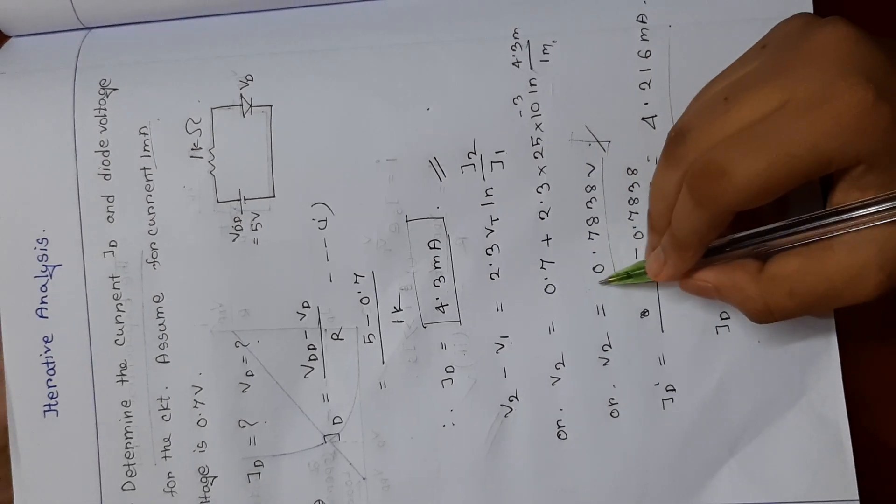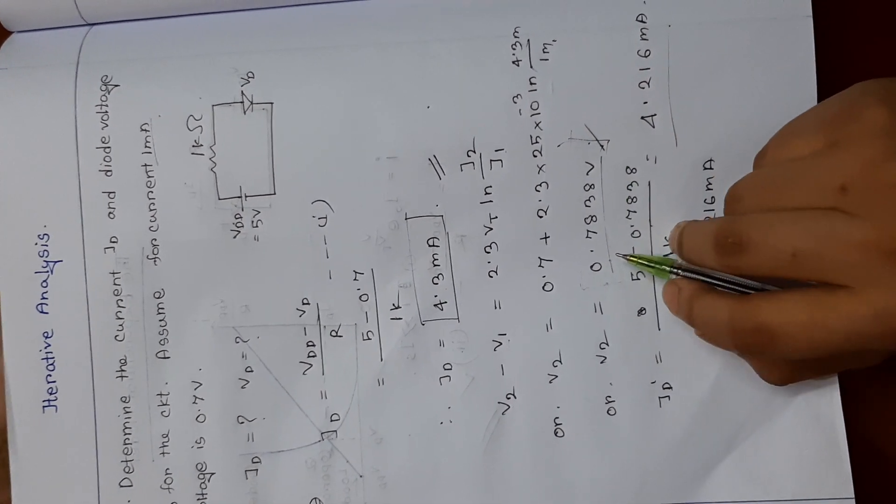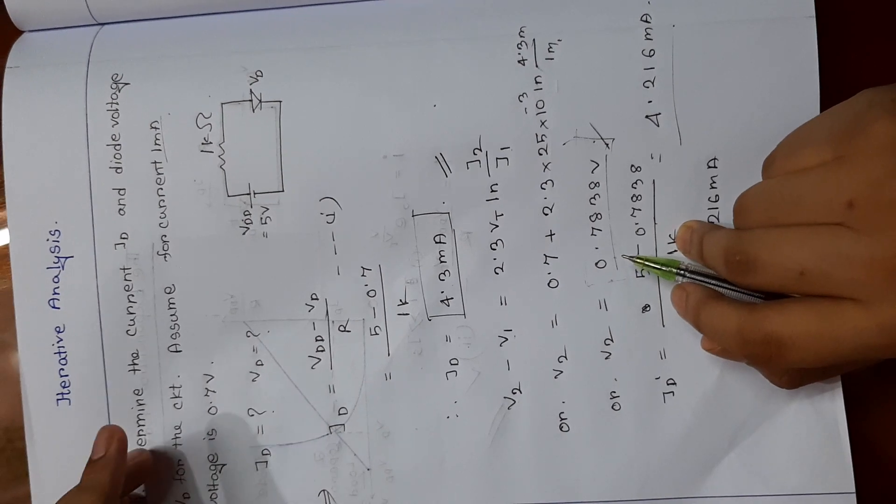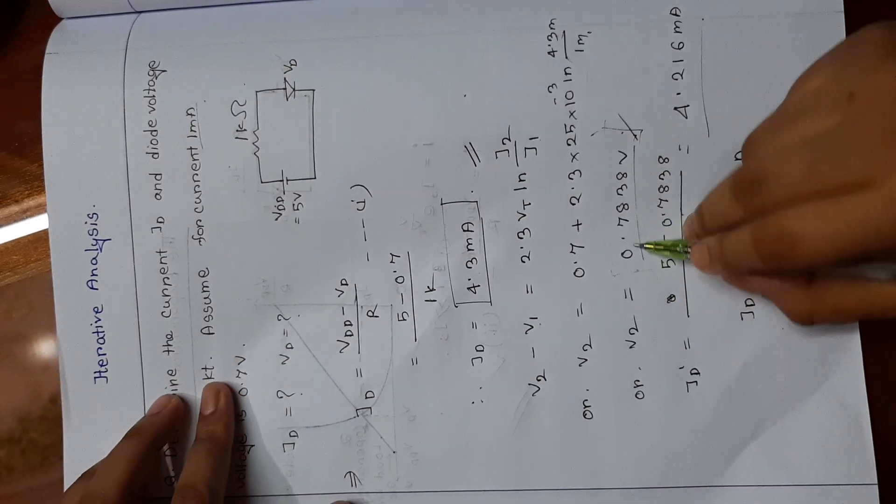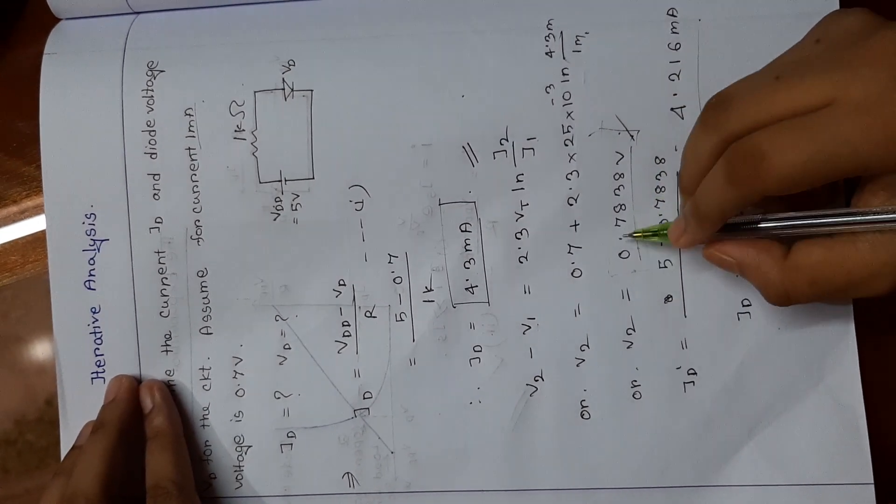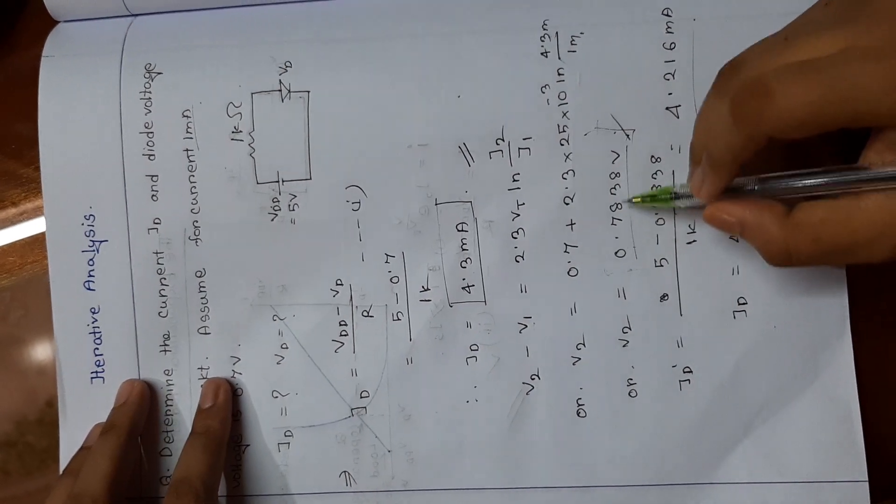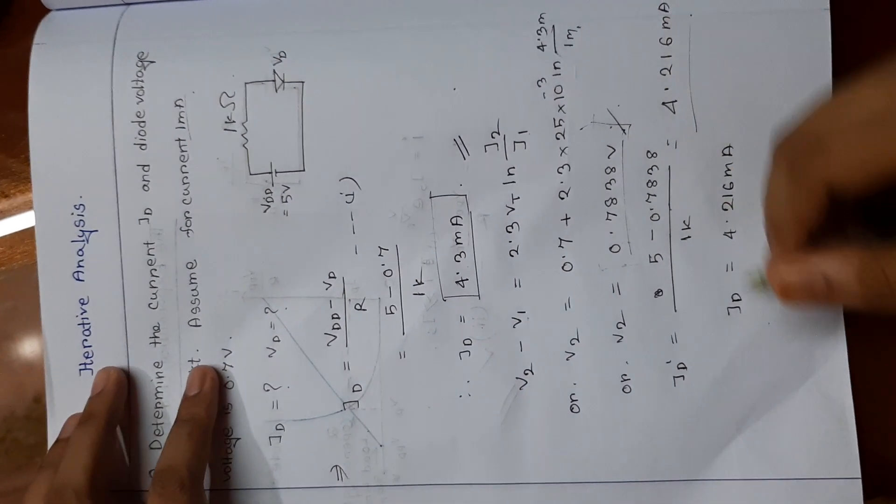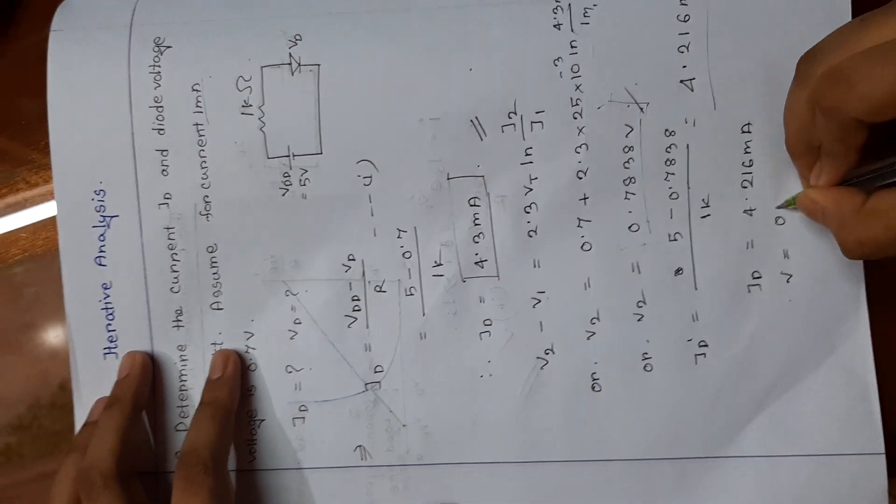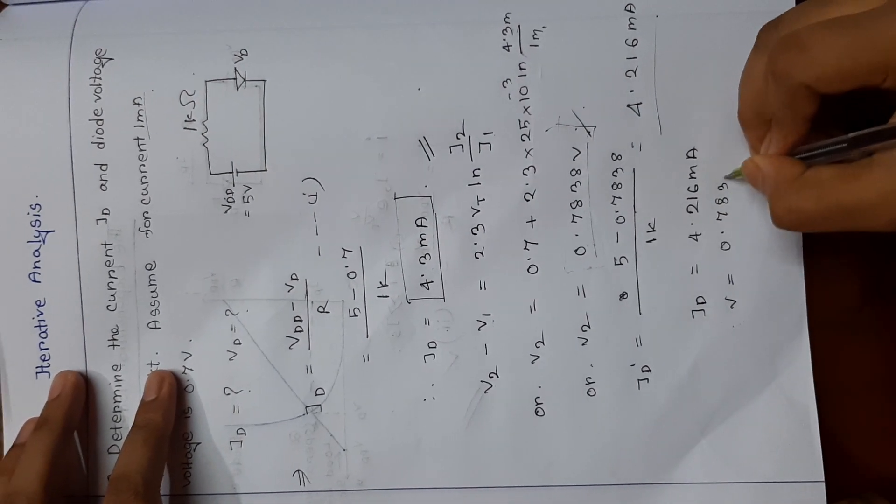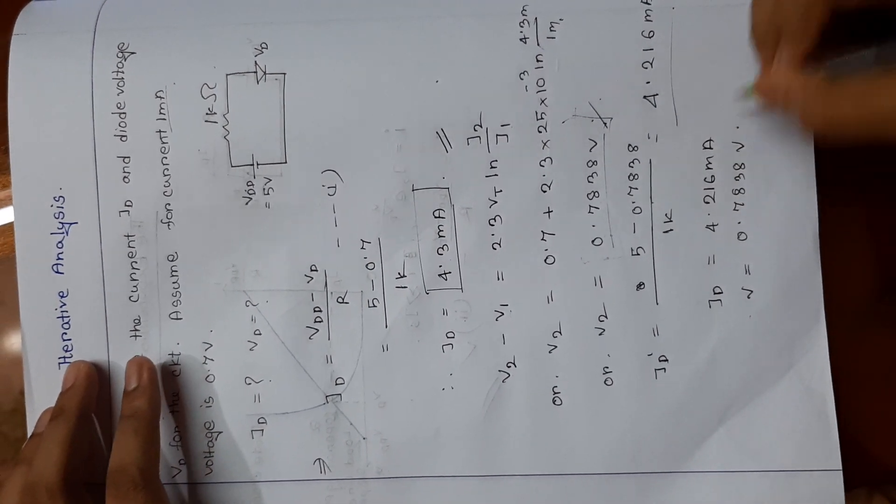And we can see that this voltage V2 is approximate to diode voltage, that is 0.7 volts. So we can take this is 0.7 volt and this is 0.7838 volt. So we can say 0.7838 is approximate to this.